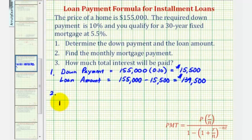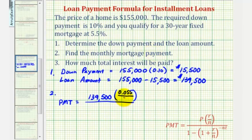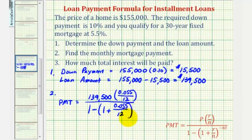So first, using our formula, the monthly payment is going to be equal to this quotient, where P is the loan amount of $139,500 times R divided by N, where R is the annual interest rate and N is the number of payments per year. So R is 5.5%, expressed as a decimal, that would be 0.055. We're making monthly payments, and since there are 12 months in the year, N is 12. Divided by one minus the quantity one plus R divided by N, which is 0.055 divided by 12, raised to the power of negative N times T, which is negative 12 times T. T is time in years — this is a 30-year fixed mortgage, so T is 30.